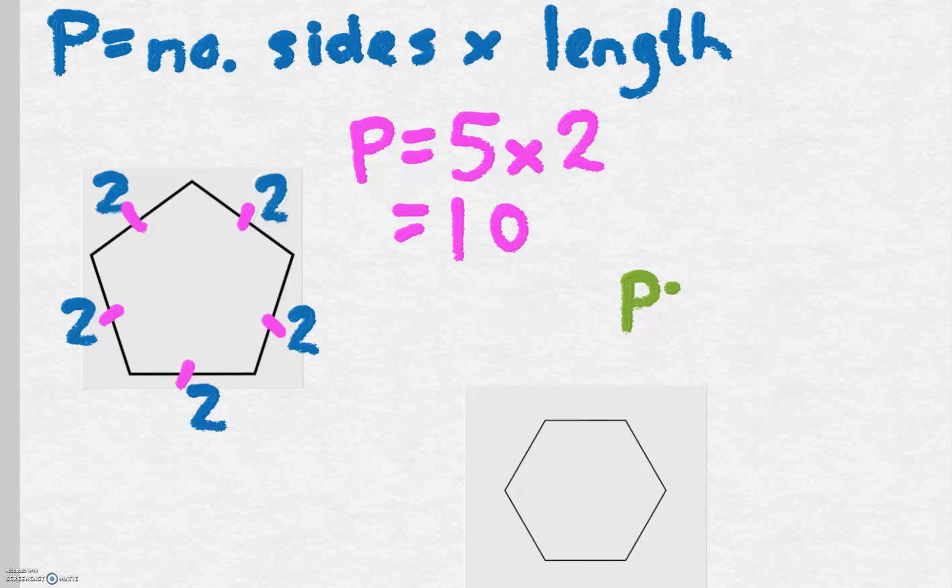So P equals, let's say the length of this was four. So P equals the number of sides which is six times the length of one side which is four. P or perimeter equals 24.